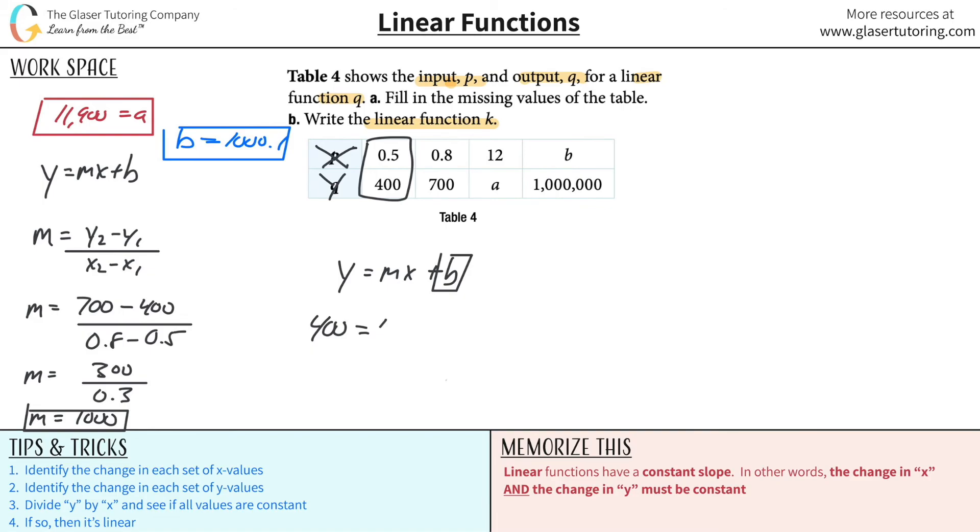So why don't we now plug in this particular point. Since they gave it to us, it would be hard to mess it up unless you copied it down wrong. So the y value is 400. Times the slope, which we found to be 1000 times the x value of 0.5 would be then plus b. So this is then 400 is equal to 500 plus then b. Subtract the 500 on across and lo and behold, voila, negative 100 is equal to b.